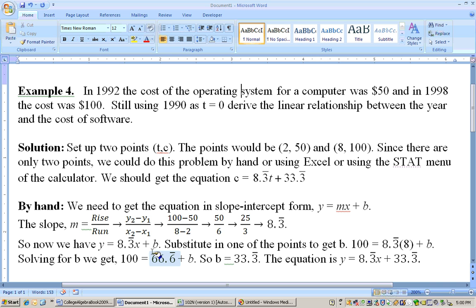Now to get the b, I could just substitute in any point. So at this point, I have y equals 8.3 bar x plus b, substitute in either one of these points, either the 8 comma 100 or the 2 comma 50, and you'll get the same answer for b. I use the 8, 100, so the 100 is what I substituted in for y right here, and the 8 is what I substituted in for x, and that gives me 100 equals 8.3 repeating times the x, and the x is 8 plus b.